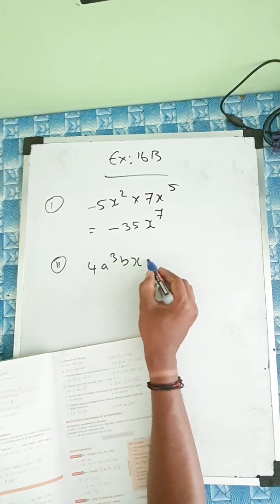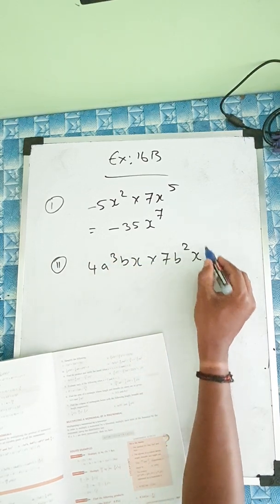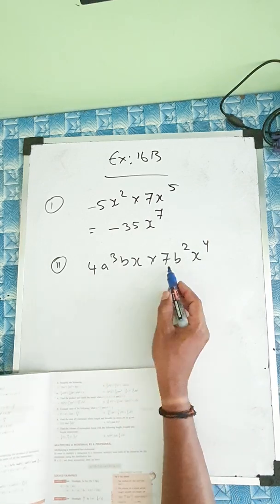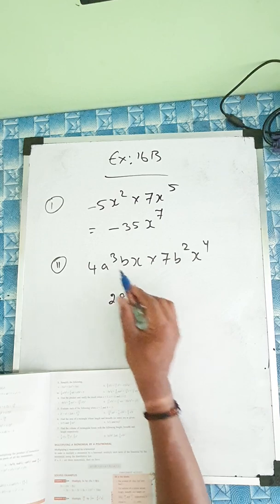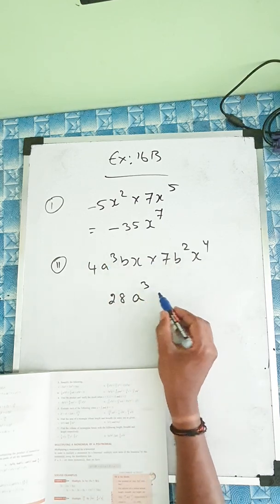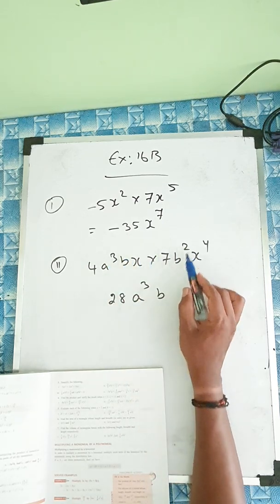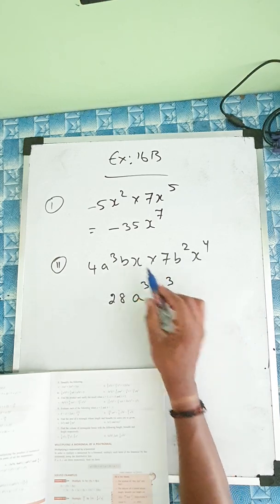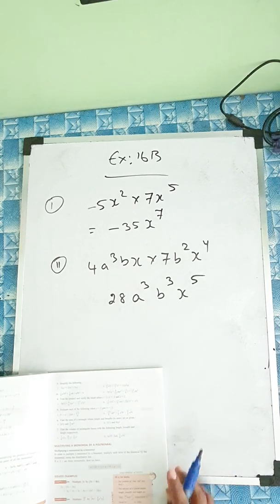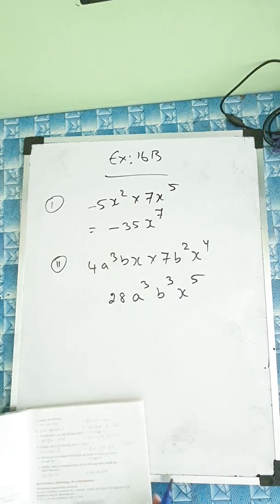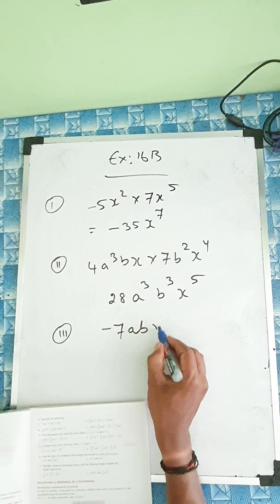...7b squared x to the power 4. So 7 times 4 is 28. For a, you only see a to the power 3 here. For b: 1 here and 2 here, so 1 plus 2 is 3. For x: 1 here and 4 here, so 1 plus 4 is 5. So the answer is 28a cubed b cubed x to the power 5.